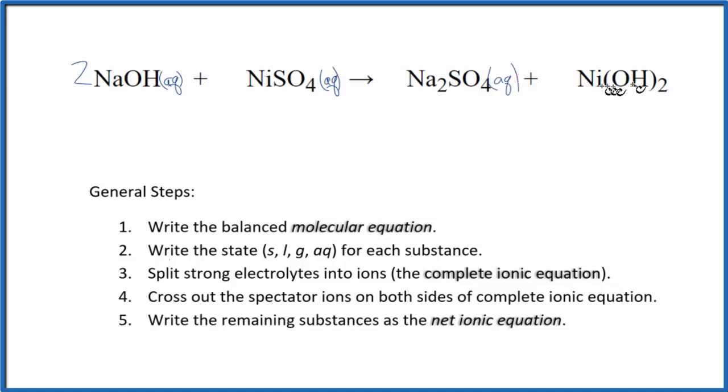But this nickel(II) hydroxide, hydroxides when they're bonded to these transition metals are insoluble or sometimes slightly soluble. Either way, we consider both of those to form a solid when we have net ionic equations. So we write a little s there. This will be a precipitate. It will fall to the bottom of the test tube when these two substances react.